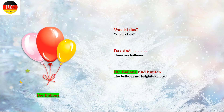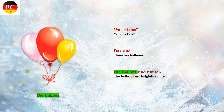Let's do practice for the plural unbestimmter Artikel. We are taking an example of balloons — 'die Ballons'. 'Die' is the plural bestimmter Artikel. Das sind Ballons — we use the unbestimmter Artikel form for plural here. 'Die Ballons sind bunt' — the balloons are brightly colored — using the bestimmter Artikel to describe the object. The answer is 'Das sind Ballons'.